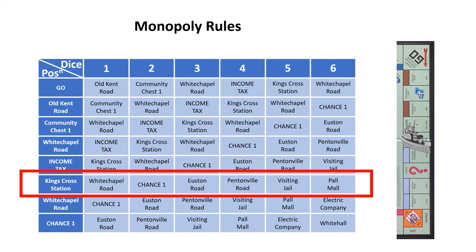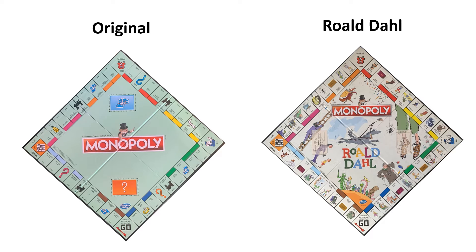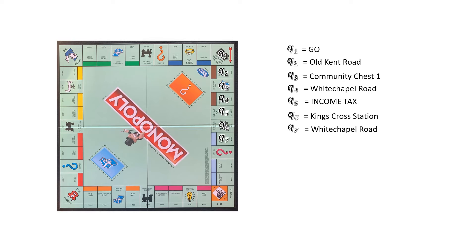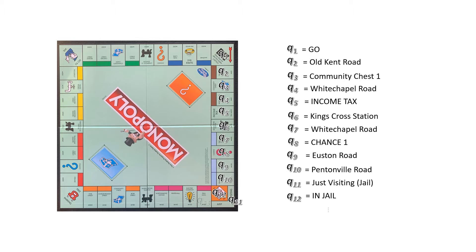I haven't done this to make the world's most boring YouTube video ever. As an aside, we can relabel all the board positions and it doesn't really change the game. Here is the Roald Dahl version of the game, which my daughters prefer — so instead of Pall Mall and Mayfair, we have Grand High Witch and Sophie. Now imagine we renamed all the Monopoly positions starting with Q1 and going all the way around to Q40. Labels like Q1 and Q40 are a lot more boring than names like Old Kent Road and Mayfair, but the game's still the same.